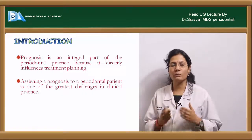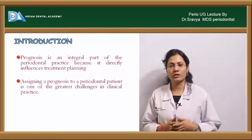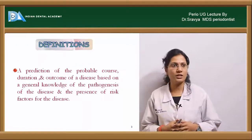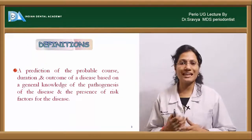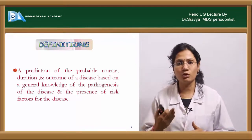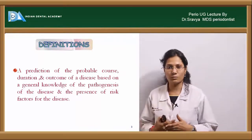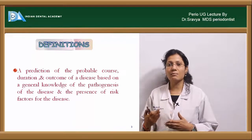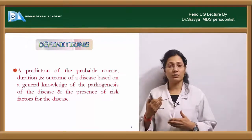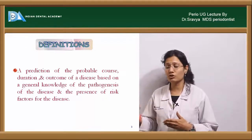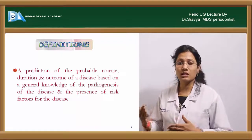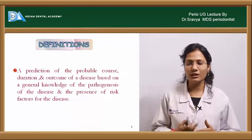How do we define prognosis? A prognosis can be defined as a prediction of the probable course, duration, and outcome of the disease based on the general knowledge of the pathogenesis of the disease and the presence of risk factors associated with the disease.